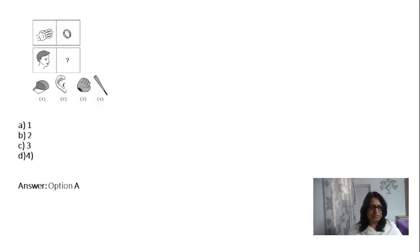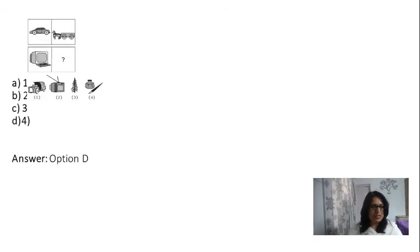Now let's have a look at some of the picture forms of analogies. Here you can see a picture that has a hand and a ring sort of a figure and a man's face, and then there's a question mark. The options that are given are a cap, an ear, a glove, and a bat. Now which one do you think should come in that particular box that has a question mark? It is option A. Why? Because hand is to ring as head is to cap. A ring is worn on the person's hand and a cap is worn on a person's head.